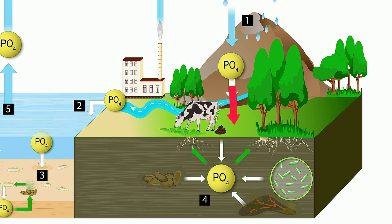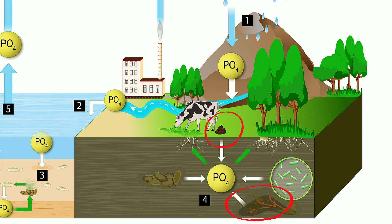Phosphate compounds in the soil can be taken up by plants and, from there, transferred to animals that eat the plants. When plants and animals excrete waste or die, phosphates may be taken up by detritivores — an example being a worm — or returned to the soil.